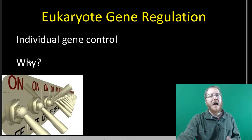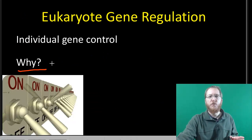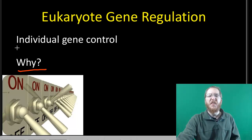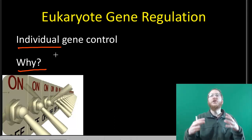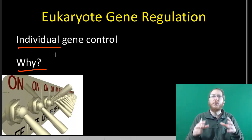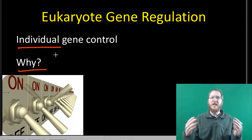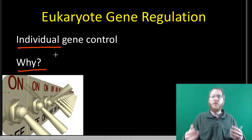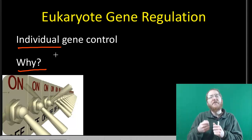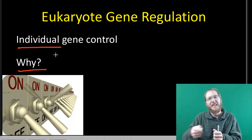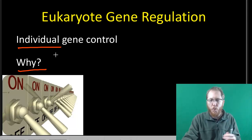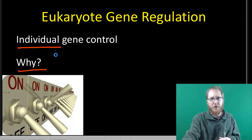Eukaryotes still try to use only what they need, but they can do it individually — each gene has its own control mechanisms. So they can turn on the three enzymes needed to break down lactose, but they'd have to flip three separate switches to do it, not one, because the genes won't be grouped together.